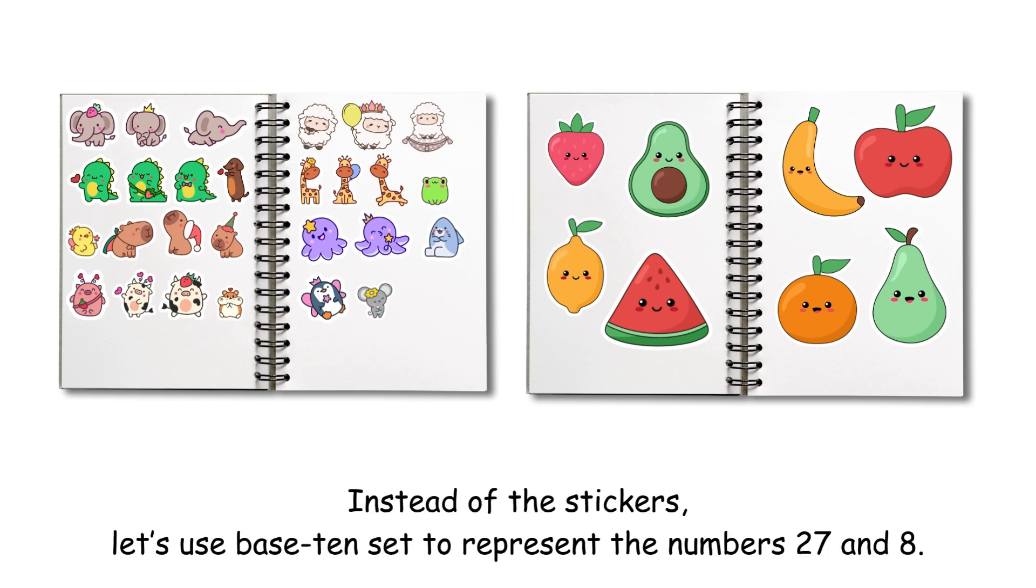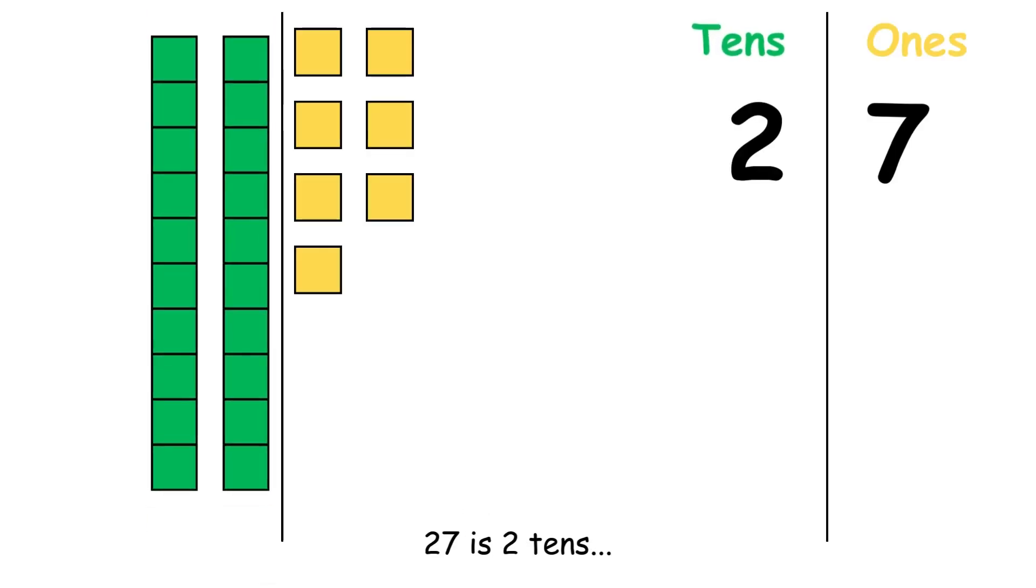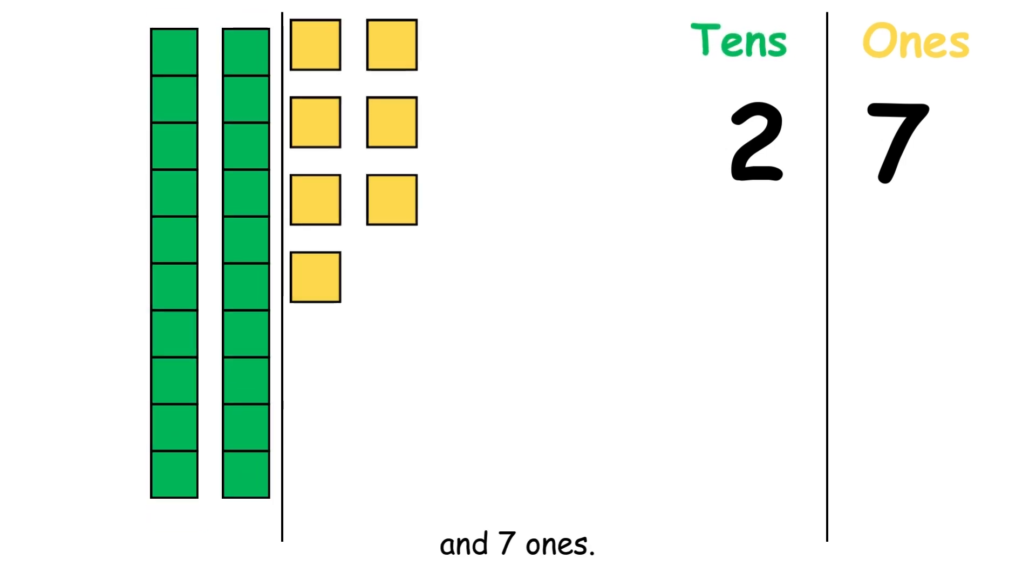Instead of the stickers, let's use base-ten set to represent the numbers 27 and 8. 27 is 2 tens and 7 ones.